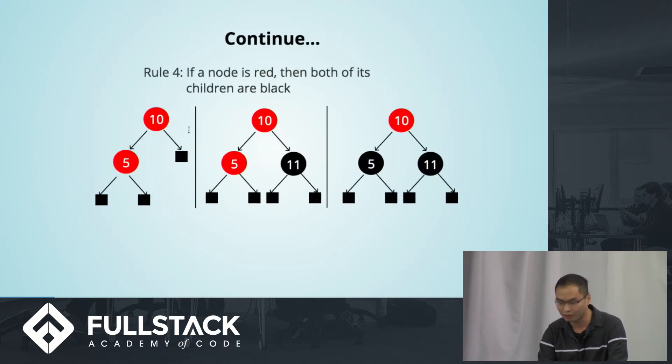Rule 4, one of the most important rules. So if a node is red, then both of his children are black. Can someone quickly tell me which case is the valid red-black tree? Yes, I see someone say this is the right one. You might ask what's this rule doing here. This coloring rule is really coming very handy for the search and insertion operation later on.